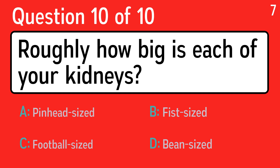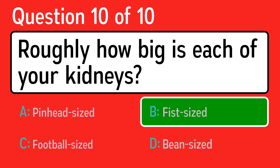And the last question is, roughly how big is each of your kidneys? The correct answer is B, fist-sized. I hope you enjoyed this quiz and make sure to share your score in the comments.